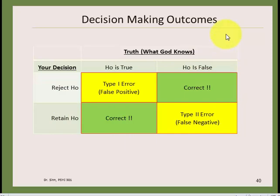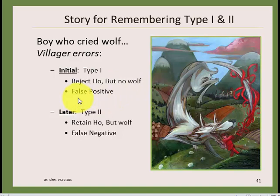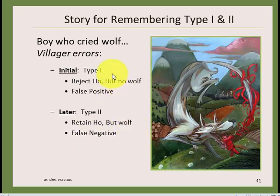An analogy: the boy who cried wolf. The boy comes to the village and says there's a wolf — the villagers believe him, reject the null, but there's no wolf. They've made a Type I error — a false positive. Later, there really is a wolf, but now the villagers don't believe him — a false negative, a Type II error. Notice the story goes in order: Type I error first, Type II error second.